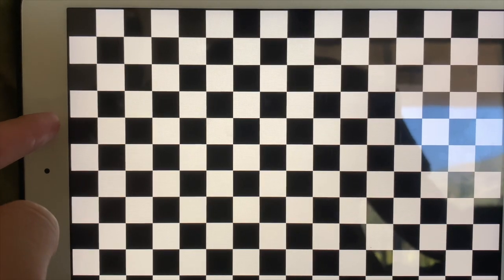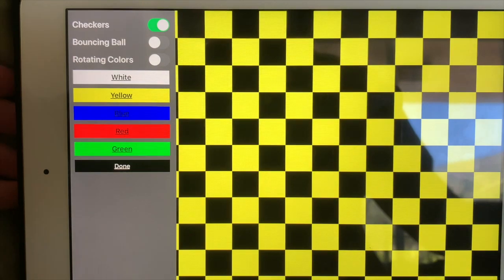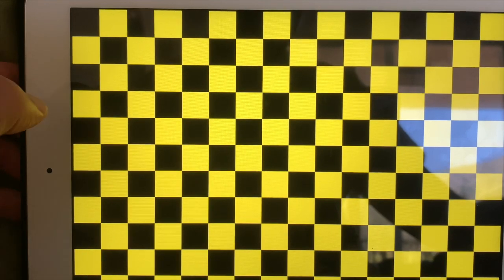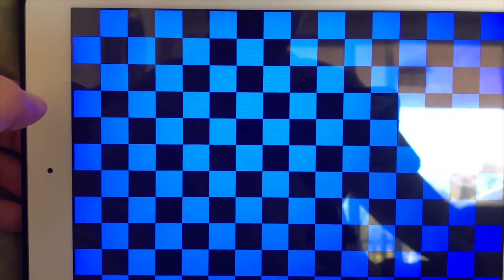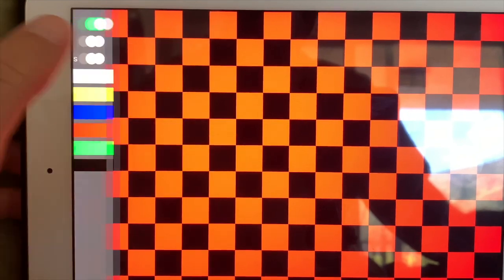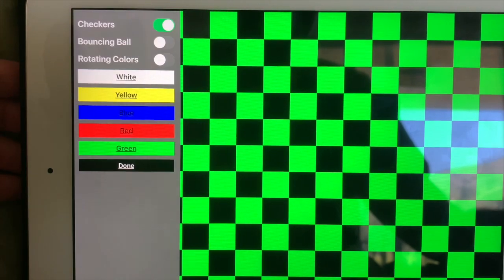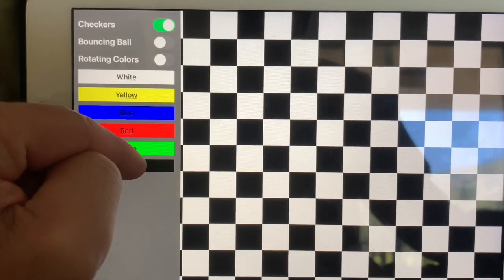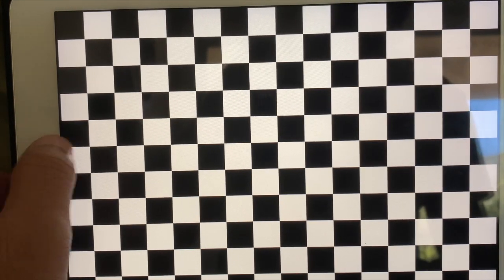To go back into the settings, swipe from the left. And now we can change the color as well of the checkerboard to yellow. Very high contrast yellow and black. Change it to blue. Very nice. Red. Red and black is another really high contrast pair of colors. Green. Looks really good. And back to white. Or you can hit done. Very nice. So that's the first activity.